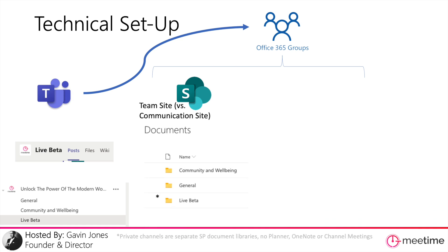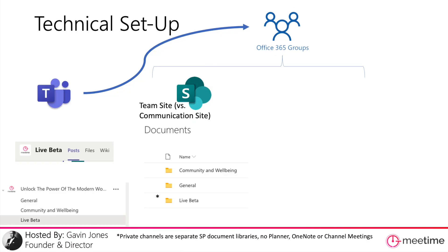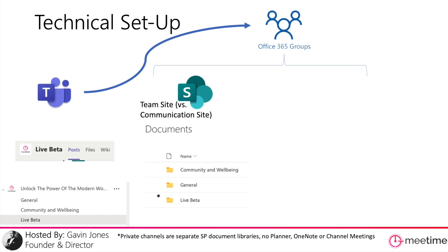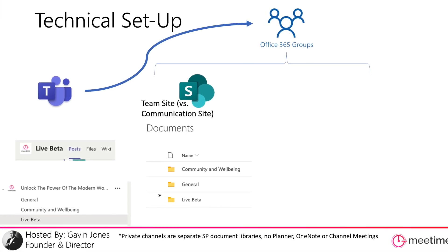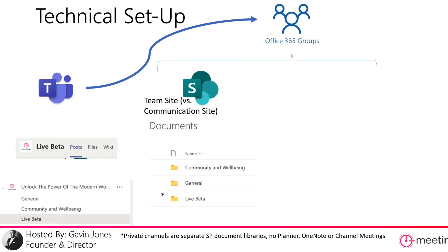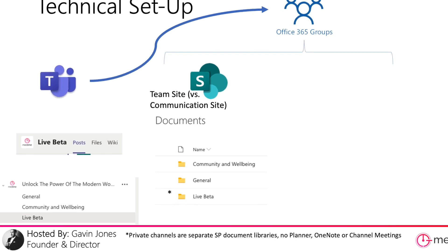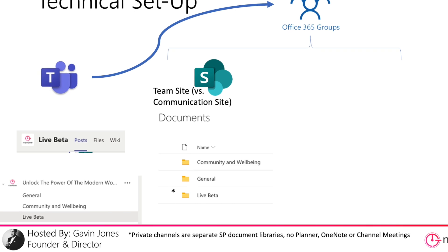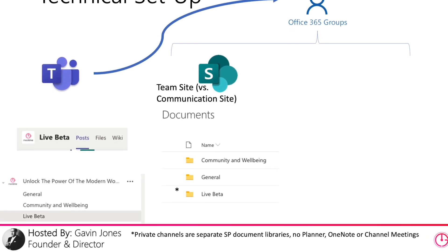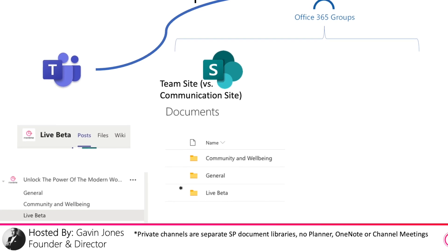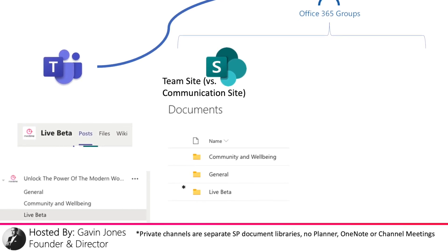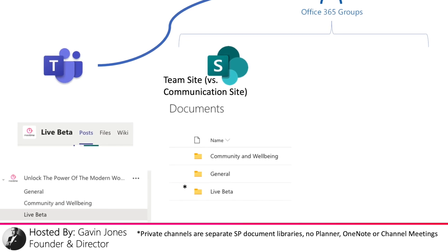An Office 365 Group creates a SharePoint site. Some people think of SharePoint just as documents, some think of it as their intranet — it's actually both. When you set up a SharePoint site it sets up a document library, and if you've created a team it creates folders in that document library for every single channel you create. So when you first set up a team with only a general channel, there'll only be a general folder in SharePoint. When you go to the files tab of general you're actually peeking into the document library of that SharePoint site and into that general folder.